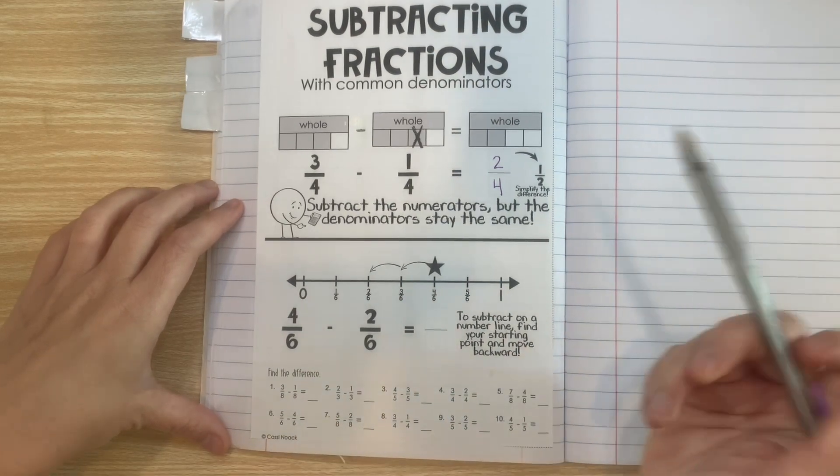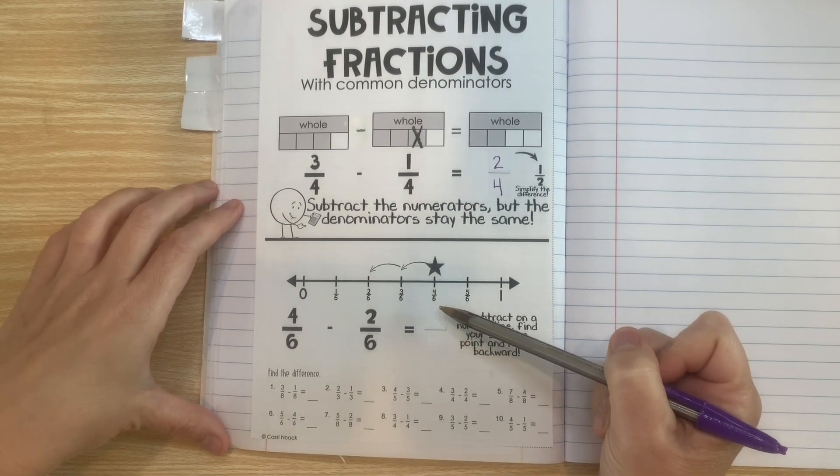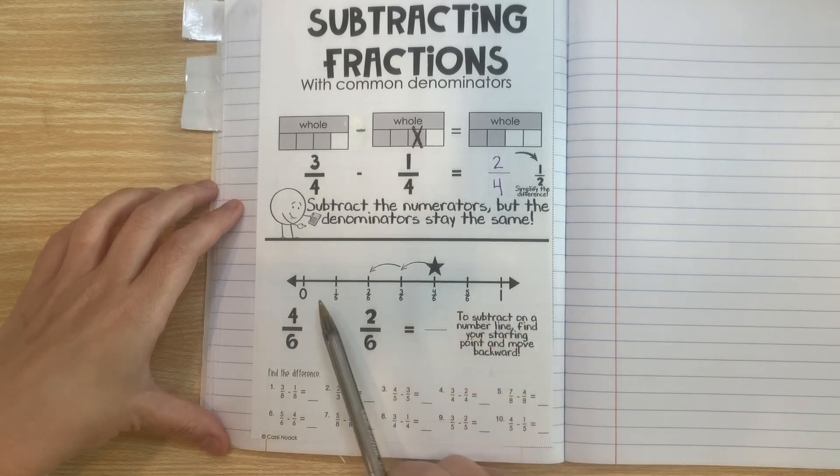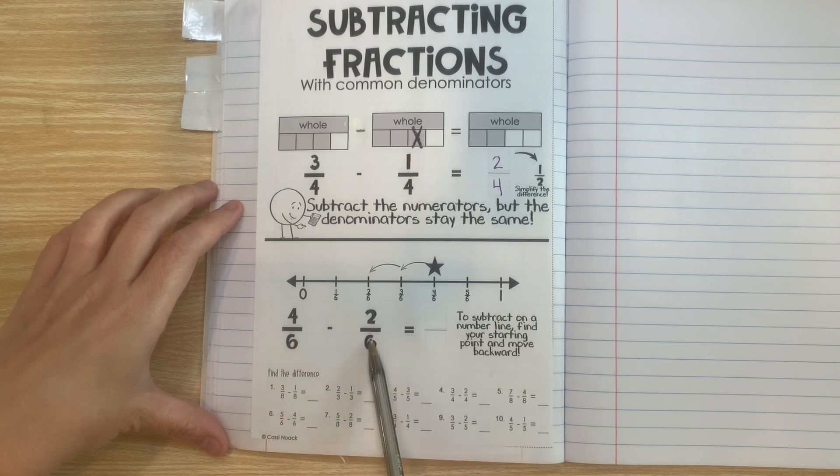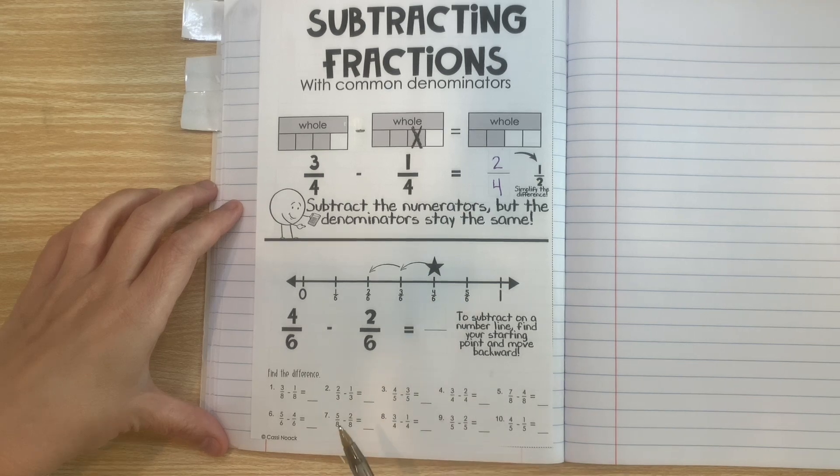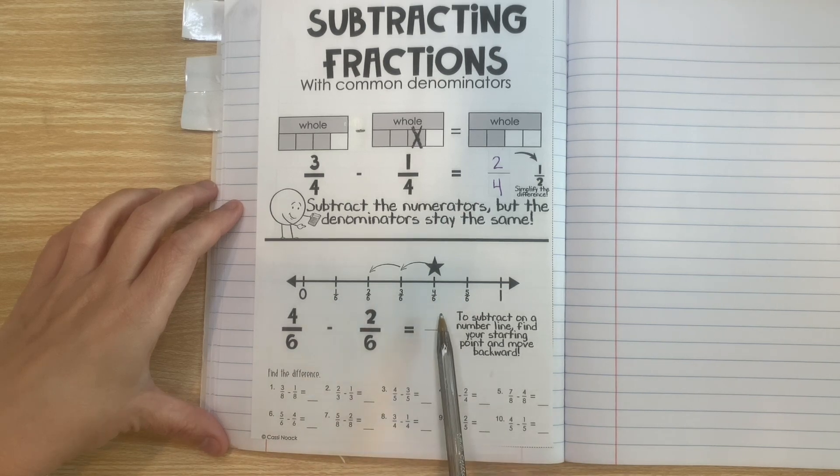We can also use a number line to help us subtract fractions. So here we have a number line and we have a number sentence of 4 sixths minus 2 sixths. So this number line has broken into six equal parts and labeled with each of the parts.